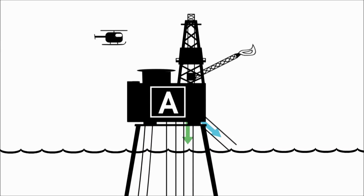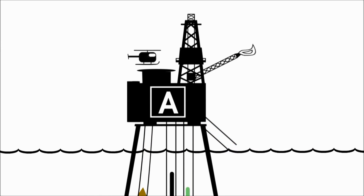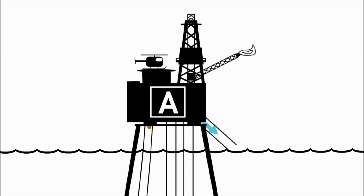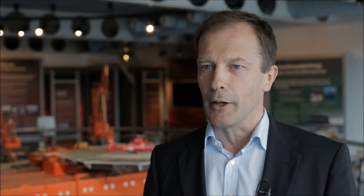As the oil and gas streams leave the platform, they can be accurately measured, but at that stage they include production that originated from different wells. One thing that hydrocarbon accounting has to do is to establish how much of those oil and gas streams came from each well.